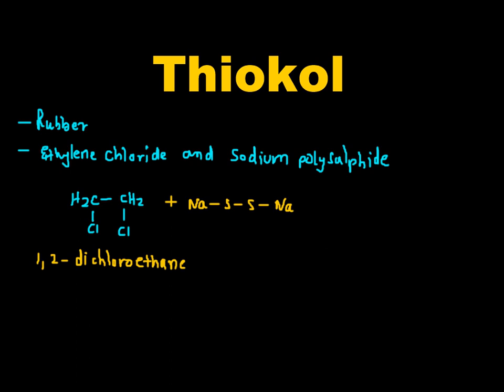We can write sodium polysulphide as S2- Na+, because sodium always exists in the form of ions — it cannot form a covalent bond. The covalent representation is just for understanding purposes.